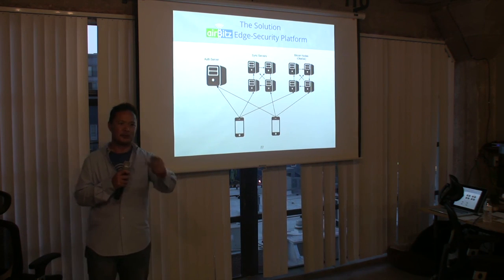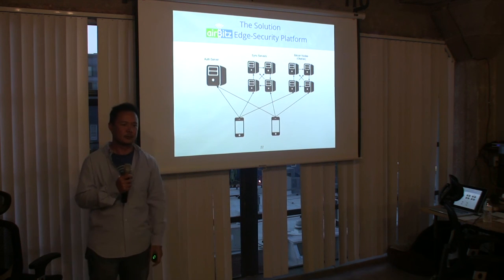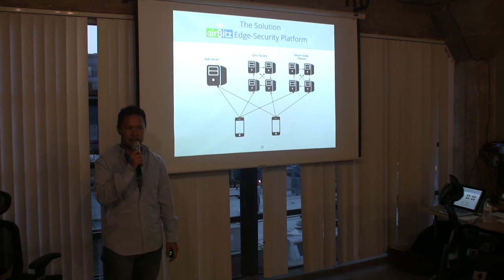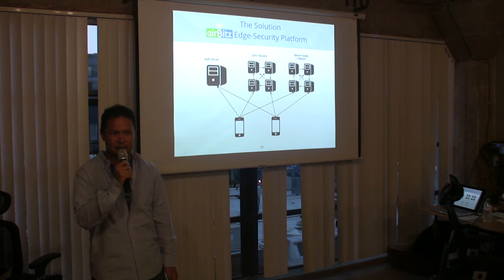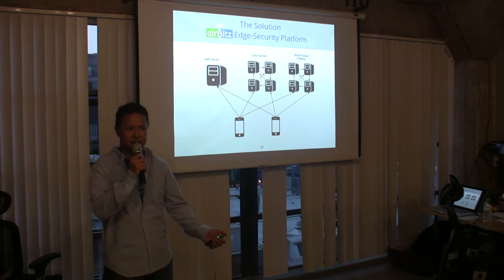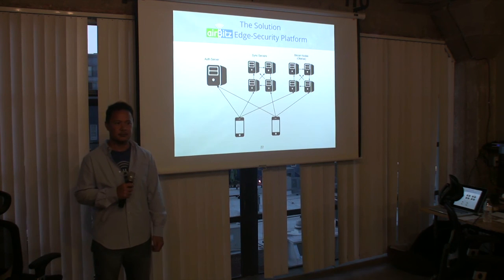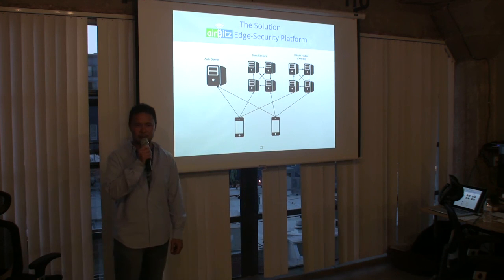How many bits is your identity key — or rather, the private key? It's whatever a standard elliptic curve Bitcoin private key is, because it's just Bitcoin — so whatever Bitcoin uses; I believe it's 192 bits, but don't quote me on that.